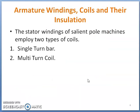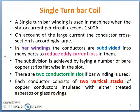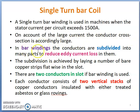Usually in case of a salient pole machine, the stator winding is employed using two types of coil: one is single turn coil and another is multi-turn coil. Single turn bar winding is used in machines when the stator current per circuit exceeds 1500 ampere. For large capacity machines, depending upon output rating, when current is very high, either single turn bar coil or multi-turn coils are used. On account of large current, the conductor cross-sectional area is also very large.